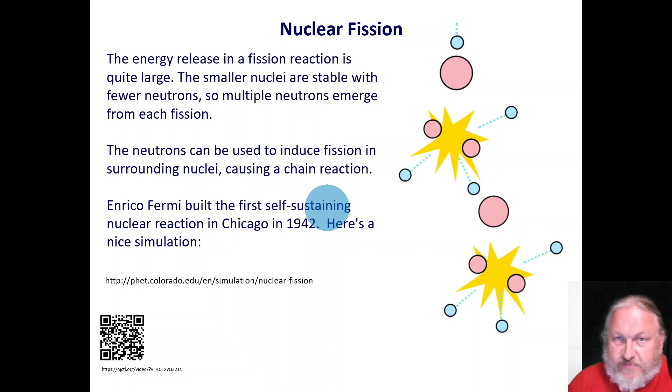The energy released in this fission reaction is very, very large. The smaller nuclei are stable with fewer neutrons. These nuclei don't like to be fat. So whenever they break apart, multiple neutrons will emerge from each fission reaction. And these neutrons can then be used to induce fission in surrounding nuclei. Then we get what we call a chain reaction. So in 1942 at the University of Chicago, Enrico Fermi built the first self-sustaining nuclear reaction. Now we'll look at this in class, or you can look at it yourself at home. Go to phet.colorado.edu. Just go to that link and then you can see what a chain reaction looks like.